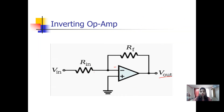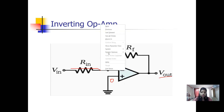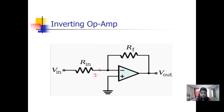I'm giving you a brief introduction based on the concept of virtual ground and virtual short. If zero voltage is at one point, the same zero voltage will appear at the other. Now suppose the current flowing in the input part is I1 and the current flowing in the feedback part is I2.